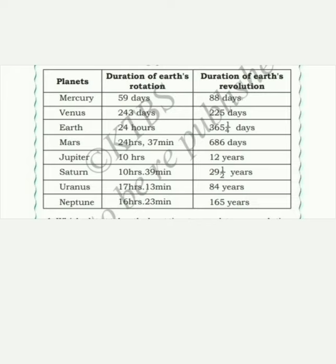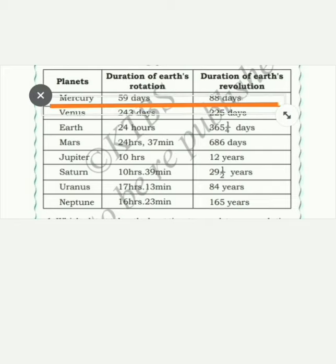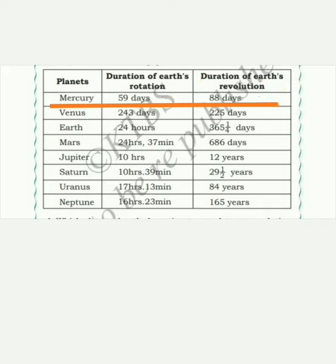The first planet is Mercury. In Mercury, there are two types of movement: one is rotation and another is revolution. Mercury takes 59 days for rotation and 88 days for revolution.